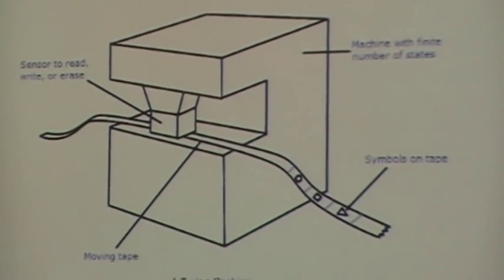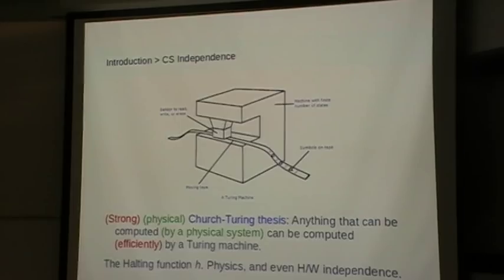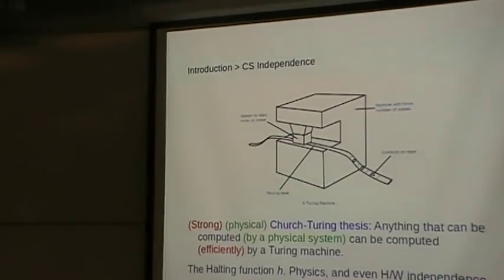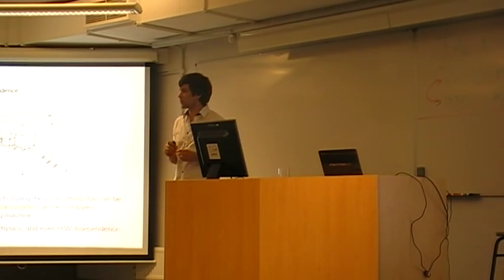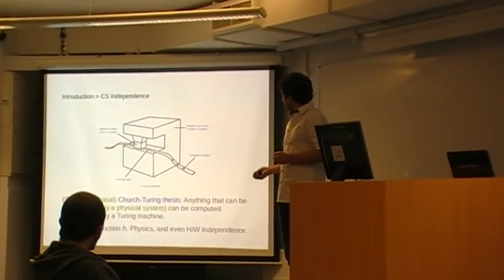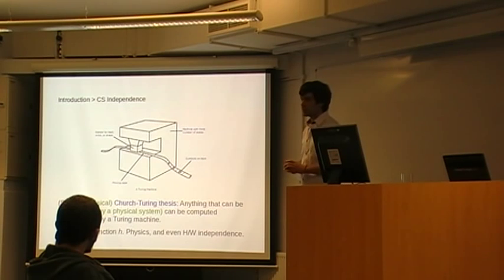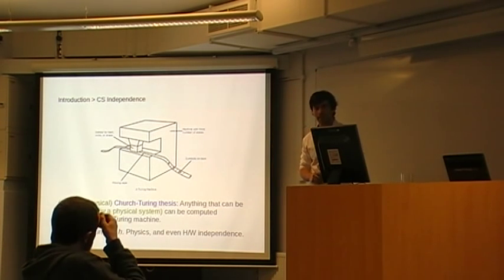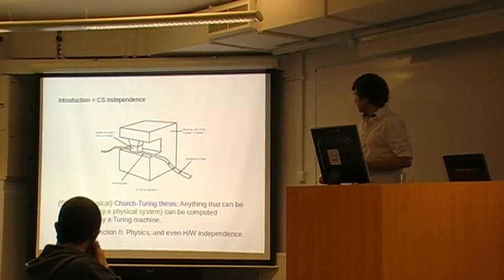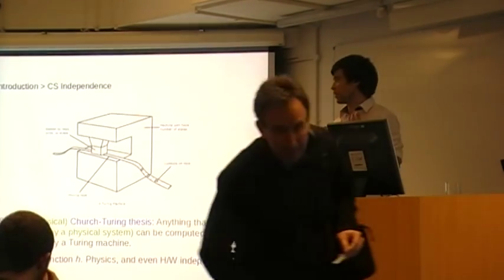I want to emphasize how important this statement is to computer science — it's a political statement of independence. Back in the days, people had in mind that computers were just a bunch of electric devices or tubes, and people knew that computer science was a branch of physics. But when I was doing my studies here in London, I was told many times that the important point was hardware independence and how we should be independent of all physical contingencies. The Turing thesis is really the cornerstone of computer science and of our independence.